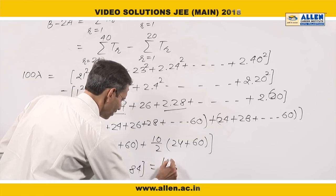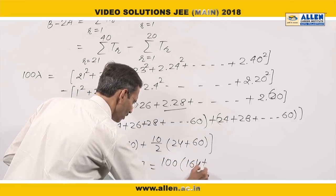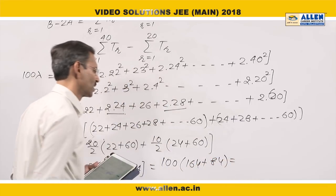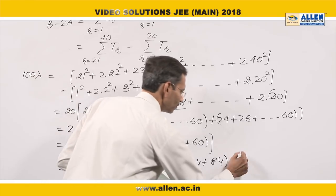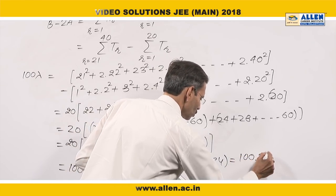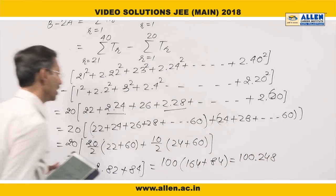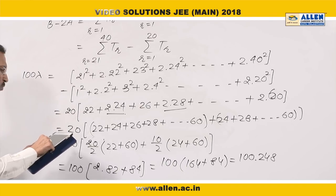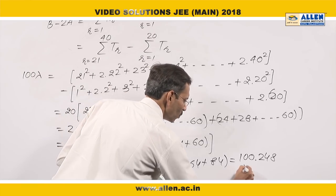100 multiplied by 164 plus 84, which is 100 into 248. If we compare it with 100 lambda, lambda is 248. So the correct option will be 1. Answer is 1.